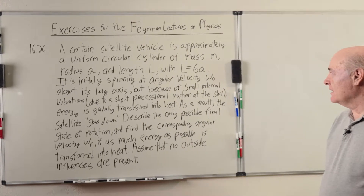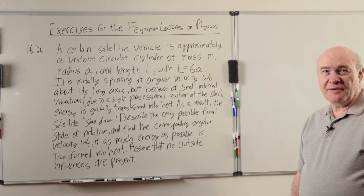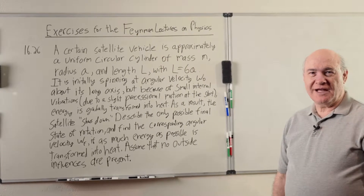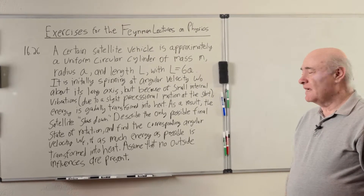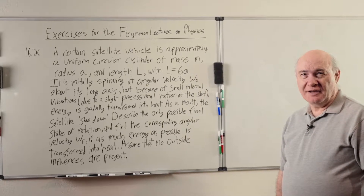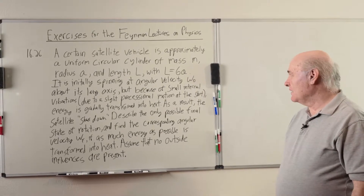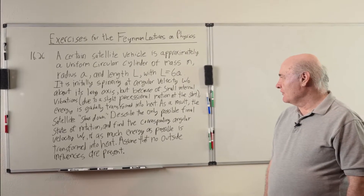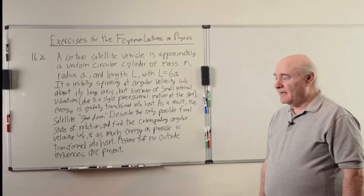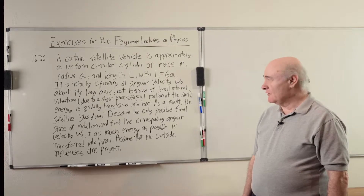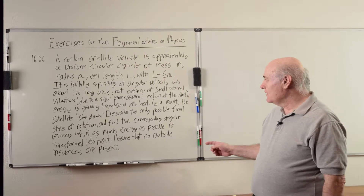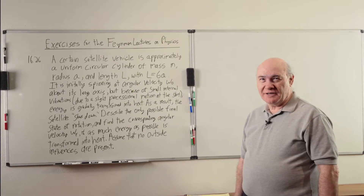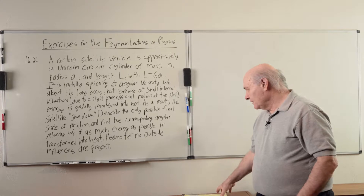This problem sounds like — for those of you who might know — JPL, Jet Propulsion Laboratory, is associated with Caltech. They did a lot of satellite launchings in the early 60s and they were new at the game. I suspect this happened to one of their satellites. It's an interesting problem, and it probably puts a lot of fear in the hearts of physics students because there's a lot of words, not that many equations, and you really have to understand what's going on.